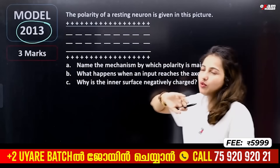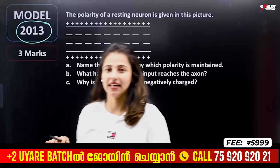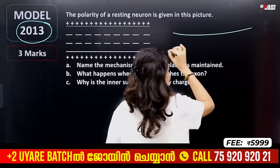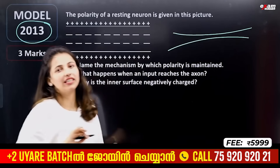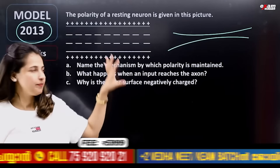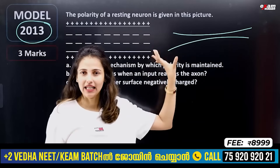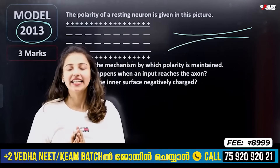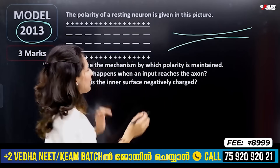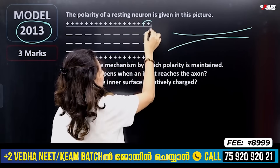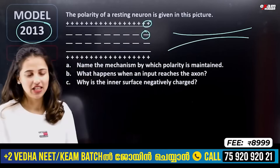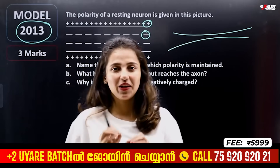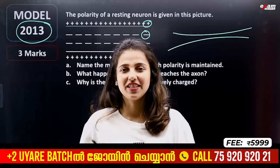We have a resting membrane. The axon is the longest filament. In the axon membrane, the resting state is a potential. The outside has a positive charge and the inside has a negative charge.